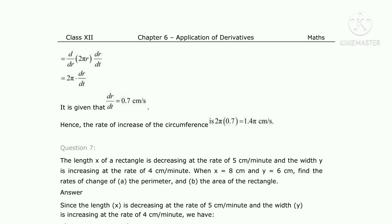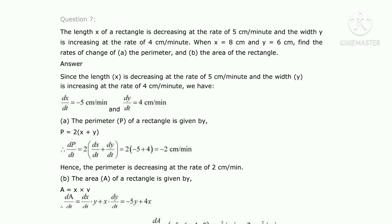Next is question number 7. The length x of a rectangle is decreasing — decreasing means negative — so dx/dt = −5 cm/min. The width y is increasing — increasing means positive — so dy/dt = 4 cm/min. Also given: x = 8 cm and y = 6 cm. We need to find the rate of change of the perimeter as well as the area of the rectangle.